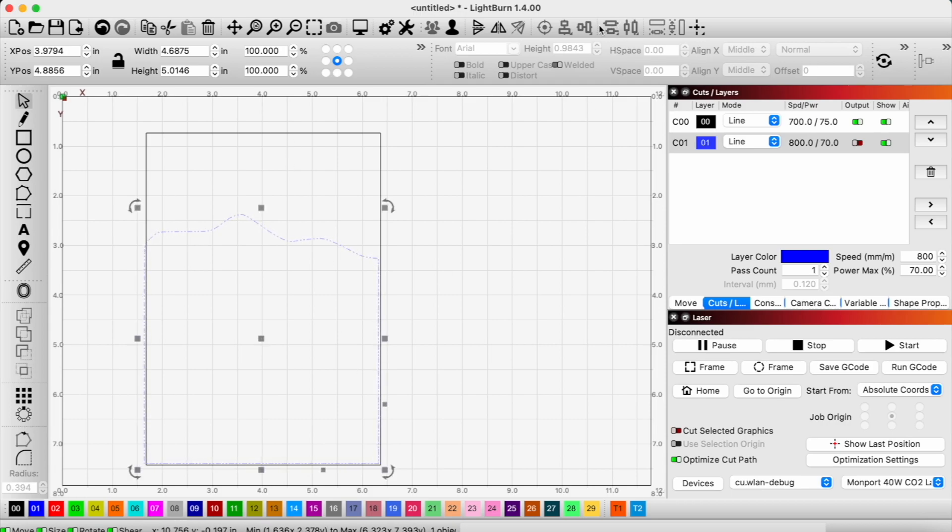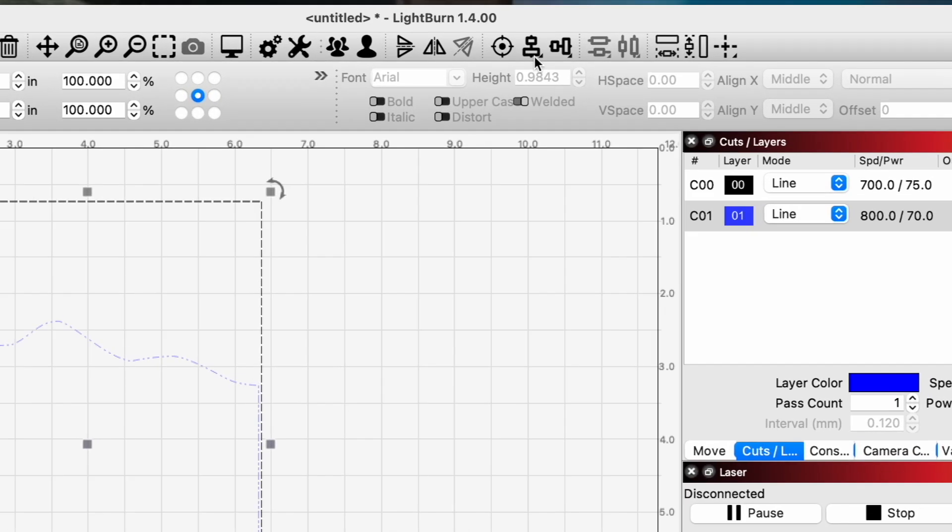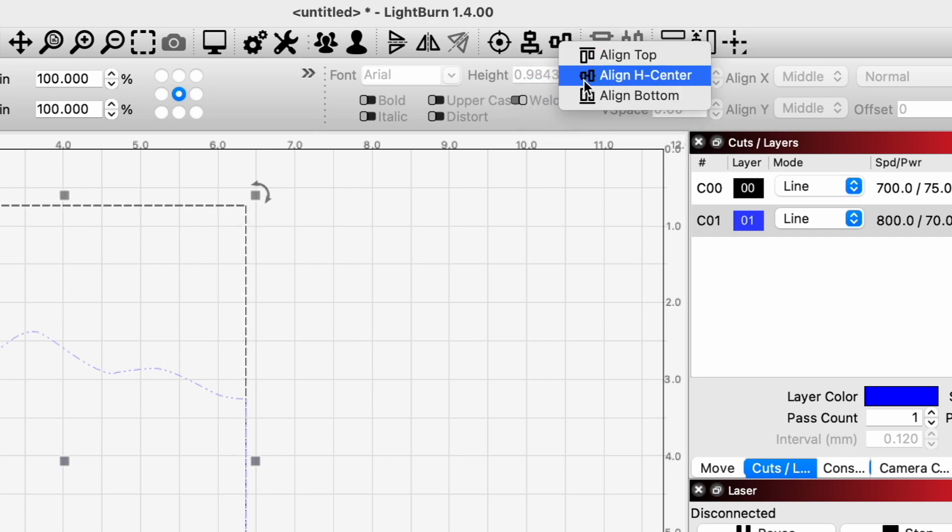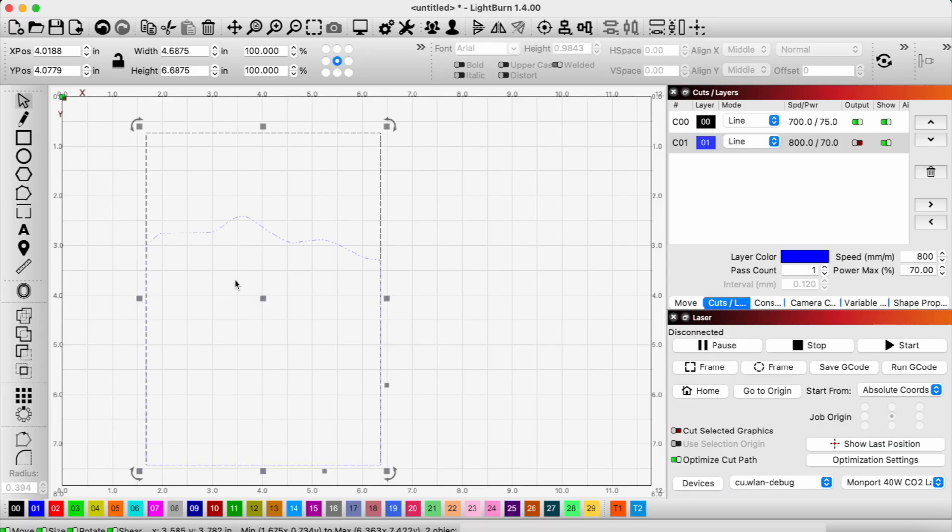And to align them, we can use the align tool. We select both of these layers, you can go to this alignment tool, center them, and then align them at the bottom, and now it's perfectly aligned. Now to the next layer.